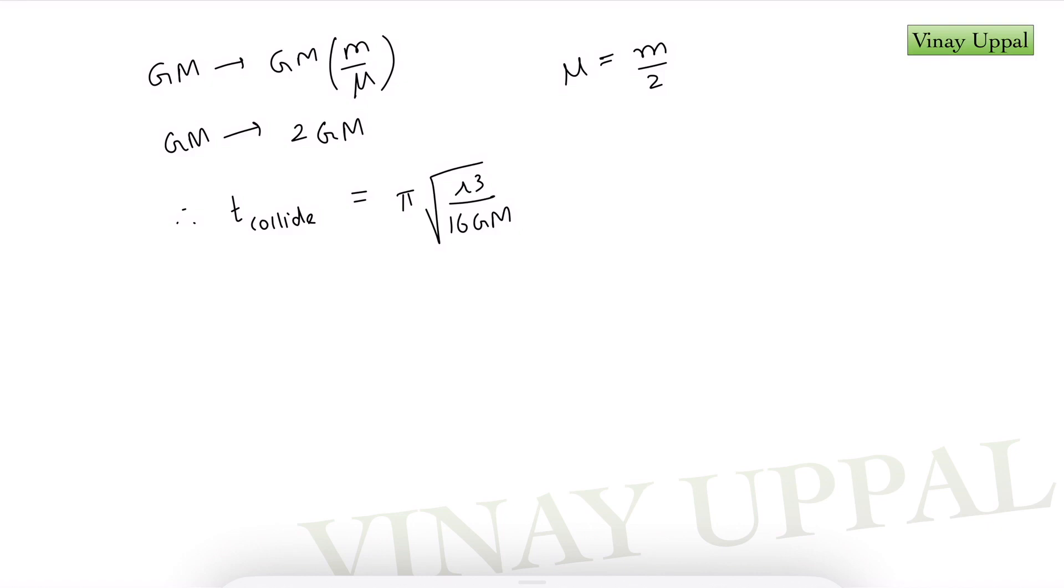Alright now let's get to the easy part of the question where they have asked us to express this time in terms of the time period of the circular orbit. Now that should be quite straight forward. I have both the particles performing circular motion about their common center of mass. So the radius for each particle will be r/2. So write my force equation as Gm²/r² should be equal to mω²(r/2).